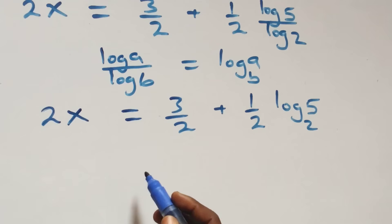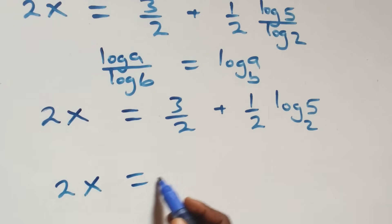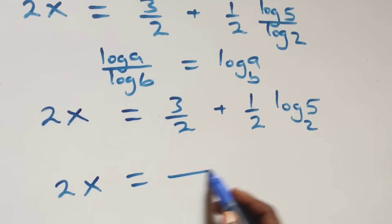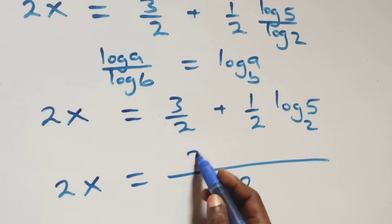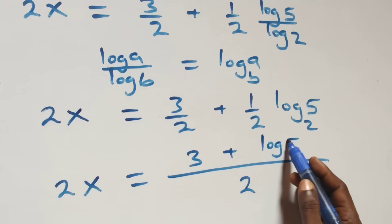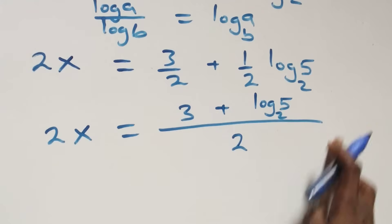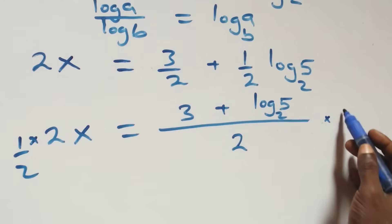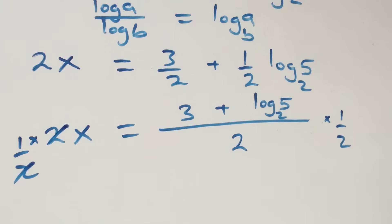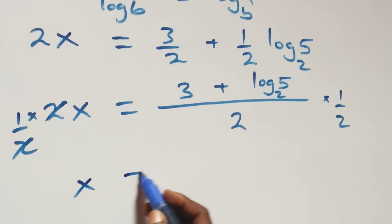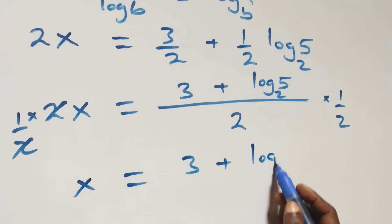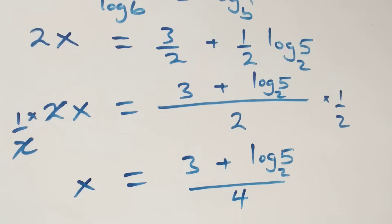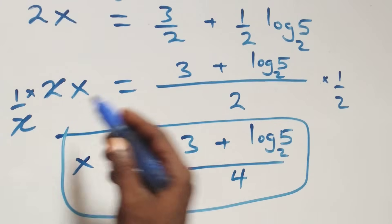We bring this together as one fraction: 2x equals to 3 over 2 plus log 5 base 2 over 2, which gives 2x equals to 3 plus log 5 base 2 all over 2. The next step: we multiply both sides by 1 over 2. The 2 cancels, and we are left with x, which is equal to 3 plus log 5 base 2 all over 4. That is, the value of x is 3 plus log 5 base 2 all over 4.